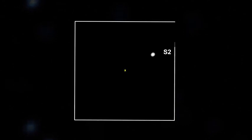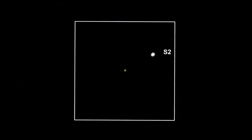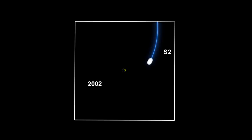The star S2 is of particular interest because it passes closer to Sag A-star than any other. It's a single main-sequence star with 10 to 15 times the mass of our sun. Observations showed that its orbit took it to within 20 light hours of Sag A-star in 2002, without bumping into anything. That put Sag A-star's 4 million solar mass into a very small place. For many astrophysicists, this constituted proof that it was indeed a supermassive black hole.